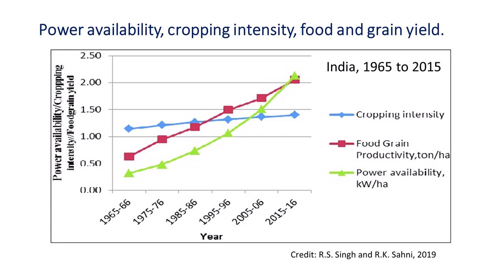This graph illustrates the time scale of those changes. Power availability as kilowatts per hectare, primarily from small tractors, two-wheel tillers, and electrical power sources, increased more than four-fold from 0.48 kW per hectare in 1975 to 2.13 kW per hectare in 2015. Food grain production has doubled and cropping intensity has increased by 20 percentage units since 1975. Tractorization and appropriate scale mechanization have contributed significantly to increasing food production and lessening the drudgery of farm work in India.